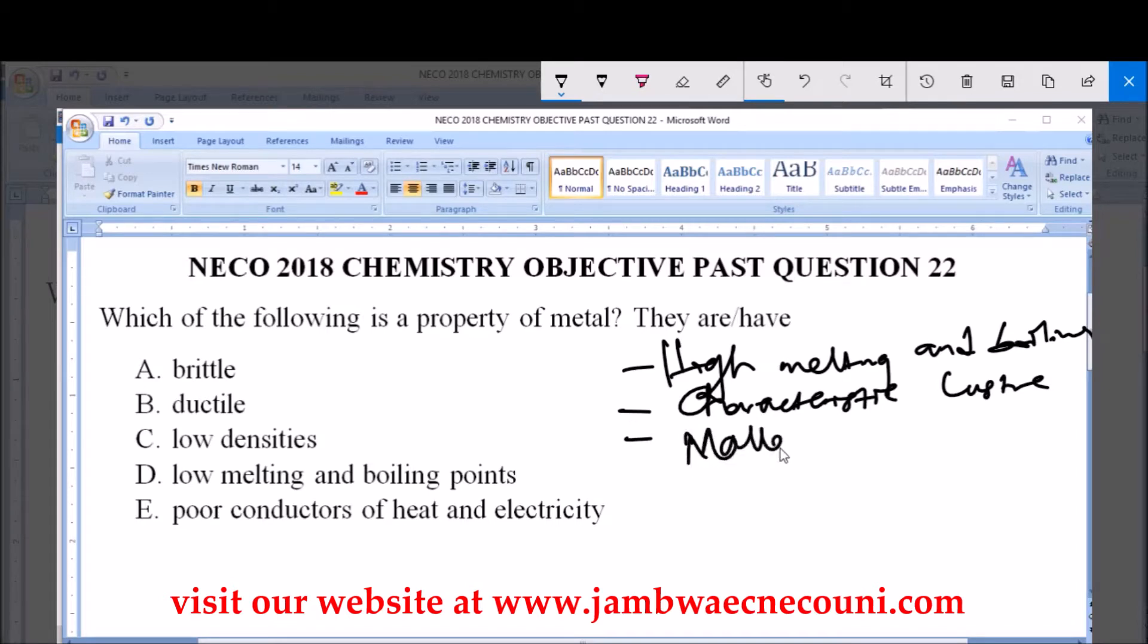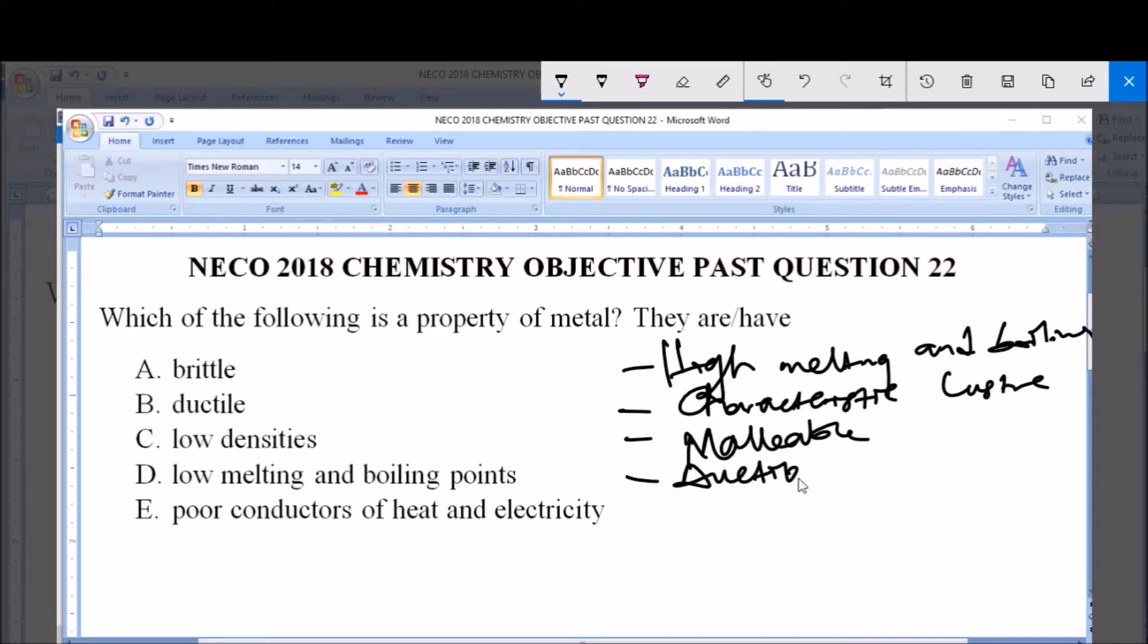Metals are malleable, that is they can be beaten into sheets. Also metals are ductile, that is they can be drawn into wire.